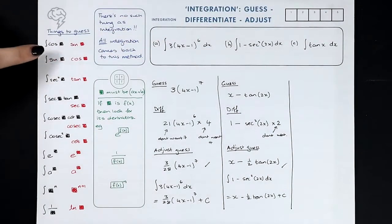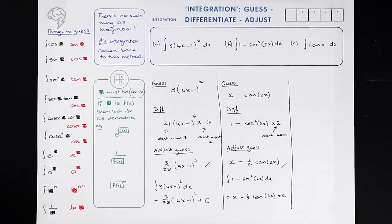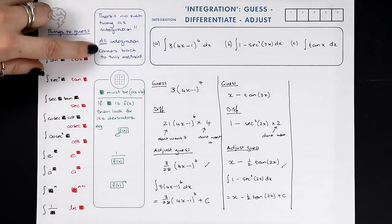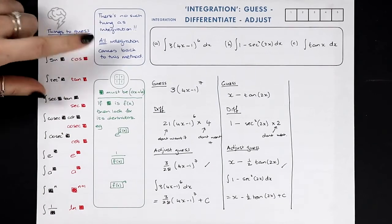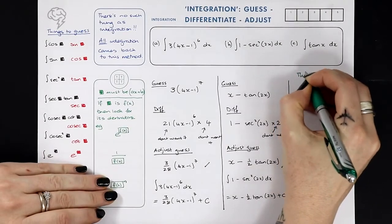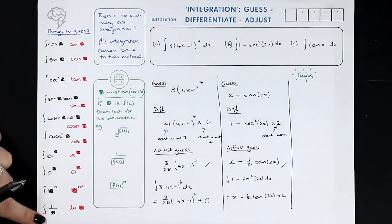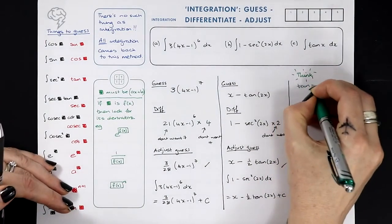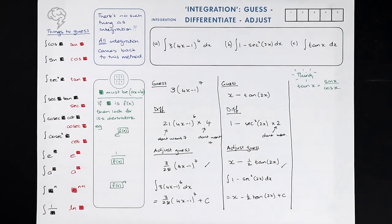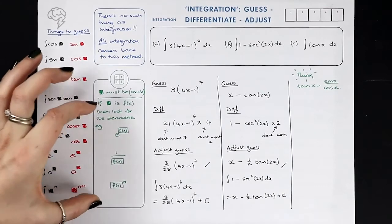Now the last one looks really confusing. Nothing differentiates to make tan — when you differentiate, none of these 10 things produce a tan. So either all integration comes back to this method, or there's a trick here. Sometimes if you do a little bit of rearranging, you see one of these things popping out. For example, tan x is sin x over cos x — but none of the 10 things produce sin x over cos x either, so I need to explain another method.